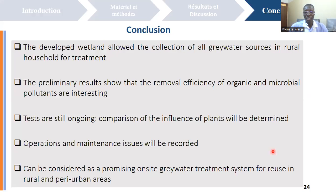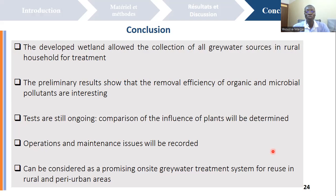In conclusion, we can say that the developed wetland allowed the collection of all greywater sources in rural households for treatment. The preliminary results show that the removal efficiency of organic and microbial pollutants are promising. The tests are still ongoing and the different analyses will help to compare the influence of the plants in the removal of pollutants. Operation and maintenance issues will also be recorded.